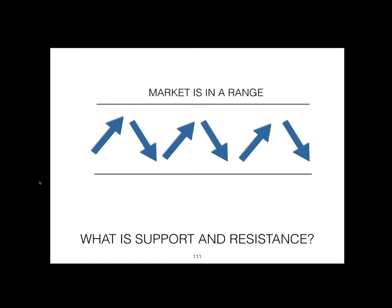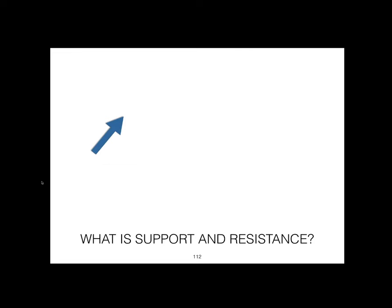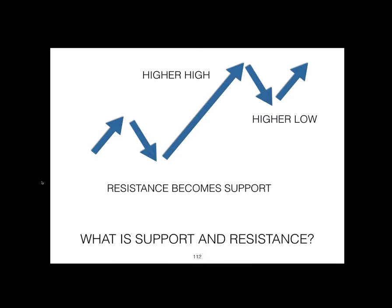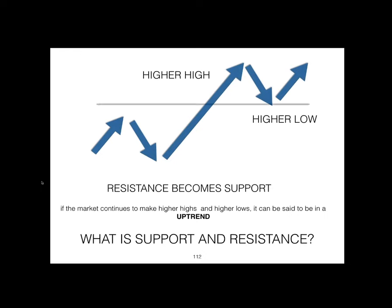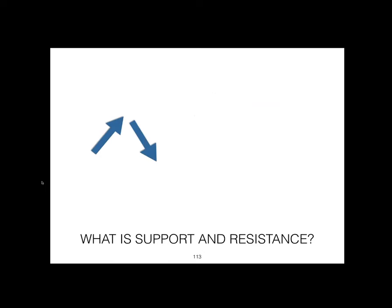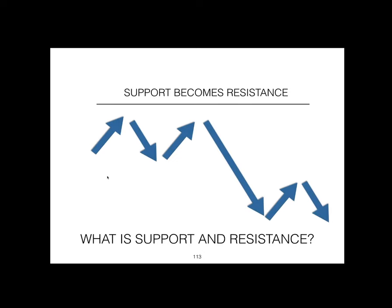Another thing to note is that when the market does break resistance, it often becomes support. The market is now making lower highs and lower lows — a market moving like this is said to be in a downtrend. That is the basics of support and resistance.